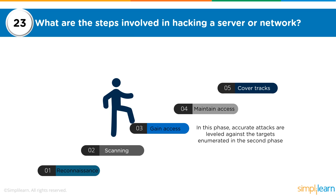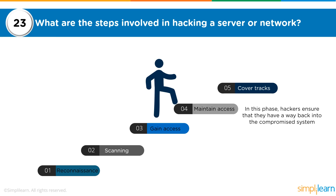Once vulnerabilities are identified, you move to the gaining access step, where you execute your attacks based on those vulnerabilities. You may gain access to a system by installing a Trojan, destroy it with a virus, or install spyware or a keylogger — whatever you wanted to achieve. Using knowledge from phases one and two, you launch attacks to gain access to that particular device.